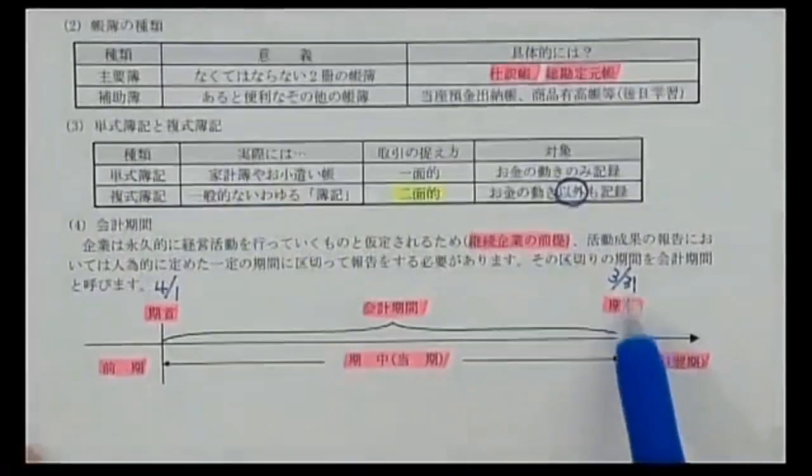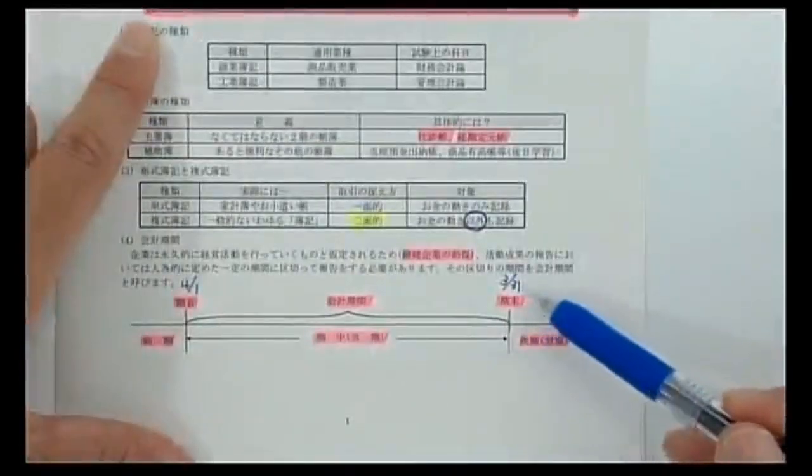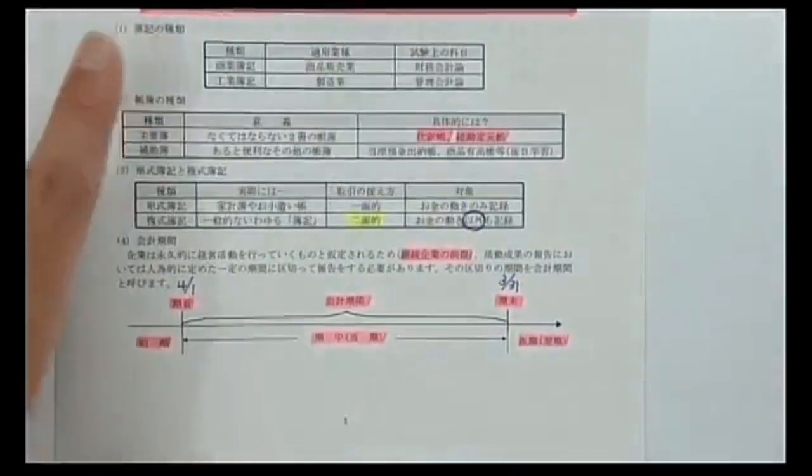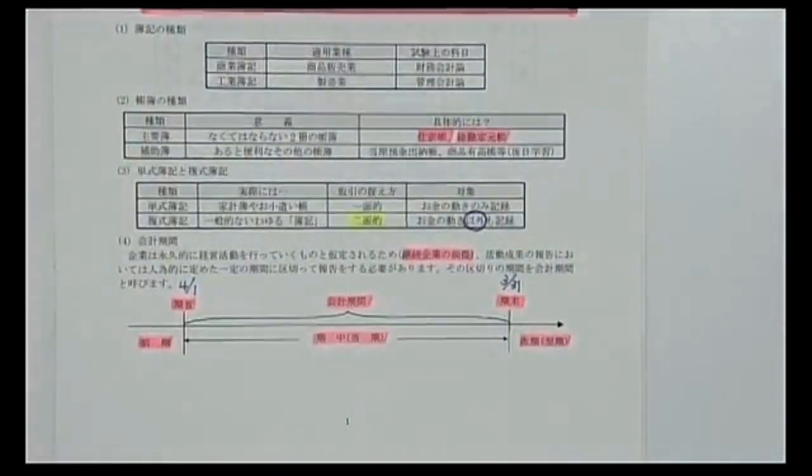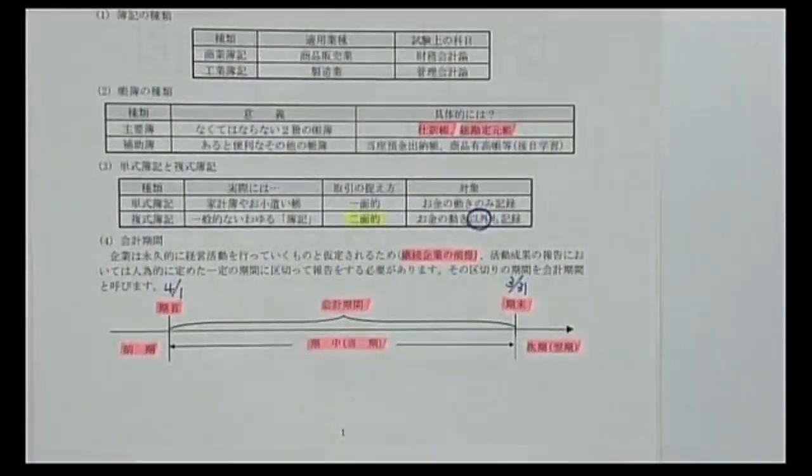4月1日期首・3月31日期末は絶対ではなく、5月1日スタートや6月1日スタートの企業もあります。会計士は3月31日で締められた財務諸表を経理の人が作ったあとチェックするので、4月から5月が最も忙しい時期です。これらは会計用語として必ず知っておく必要があります。